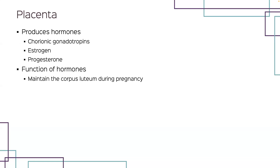The placenta functions as a temporary endocrine gland. During pregnancy it produces chorionic gonadotropins — named because they are tropic hormones secreted by the chorion, the outermost membrane surrounding the embryo and fetus during development. In addition to producing these hormones, the placenta also produces estrogen and progesterone. During the earliest weeks of pregnancy, the kidneys secrete a large amount of chorionic gonadotropins into the urine. This is what early pregnancy tests typically detect in urine and blood.